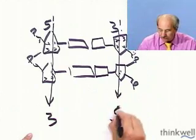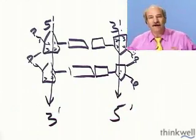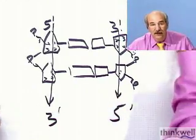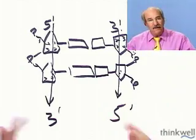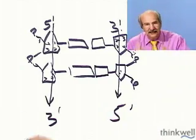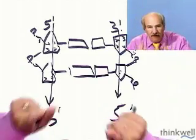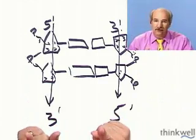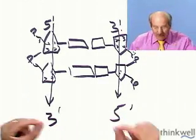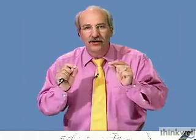The anti-parallel directionality is significant because of the enzymes involved in DNA replication — particularly the enzyme DNA polymerase. That enzyme only reads in one direction, and therefore it can only read one side of these strands properly.